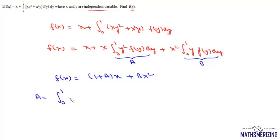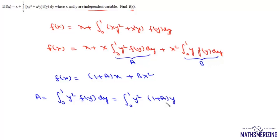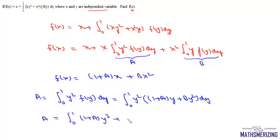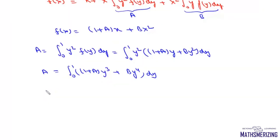We know that a is the integral from 0 to 1 of y²·f(y) dy. Substituting f(y) = 1 + ay + by², we write a as the integral from 0 to 1 of y²(1 + ay + by²) dy, which expands to the integral from 0 to 1 of (y² + ay³ + by⁴) dy.